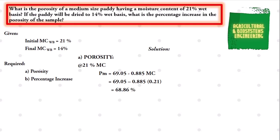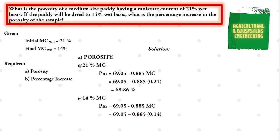Next, we now solve for the value of the porosity of the final moisture content of 14%. We simply use again the same formula, so we have: 69.05 minus 0.885, multiplied by the moisture content of 14%, converted to decimal of 0.14. We simply solve and we have a final value for our porosity of the final moisture content to be 68.93%.